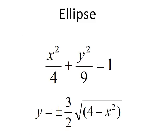Now we'll graph the ellipse, which is another conic section. The equation we'll use is x squared over 4 plus y squared over 9 equals 1. The center of this ellipse will be at the origin. But in order to graph it, since it's not a function, we'll actually find the equation for the upper half and the lower half. Here we see the equation plus or minus 3 halves times the square root of 4 minus x squared.